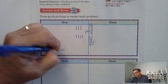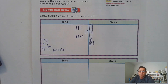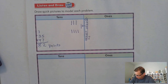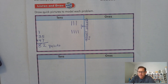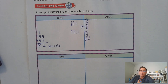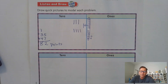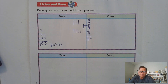Here's the second problem. After I read the problem, pause the video to draw your quick picture and find the sum. Patty scored 18 points. Then she scored 21 points. How many points did she score in all? Again, Patty scored 18 points, then she scored 21 points. How many points did she score in all? Go ahead and draw your quick picture. Regroup if needed to find the sum. Go ahead and pause the video.